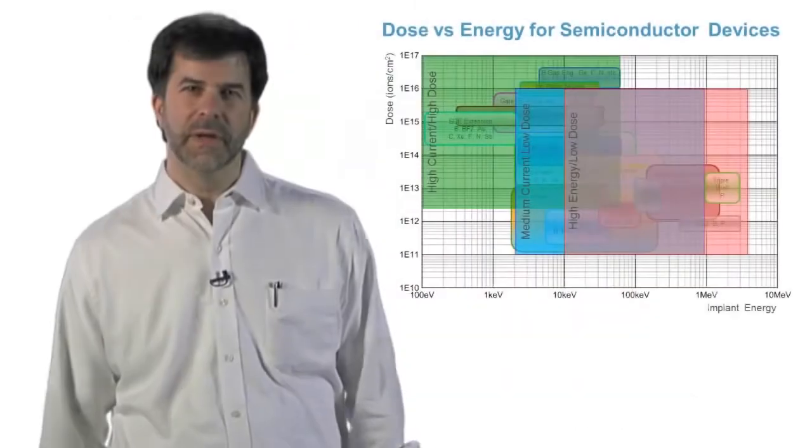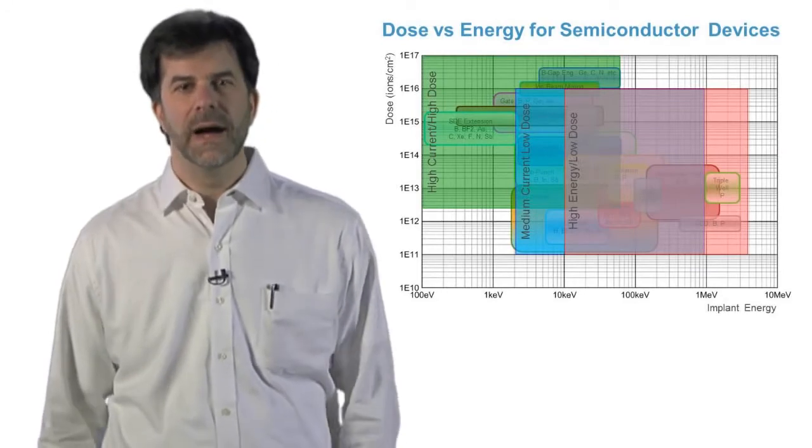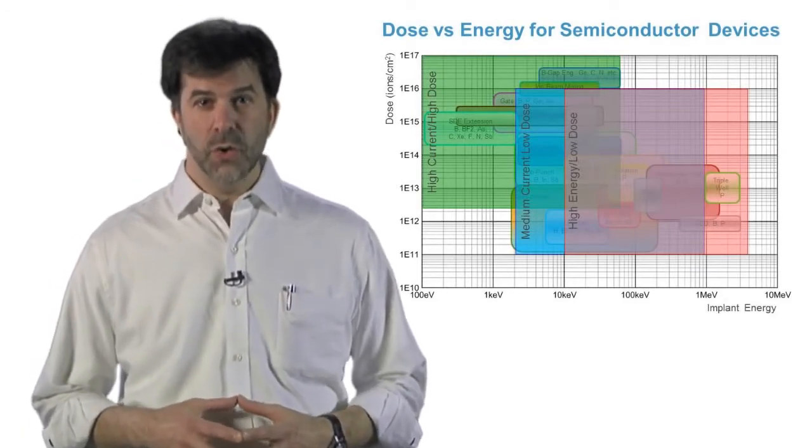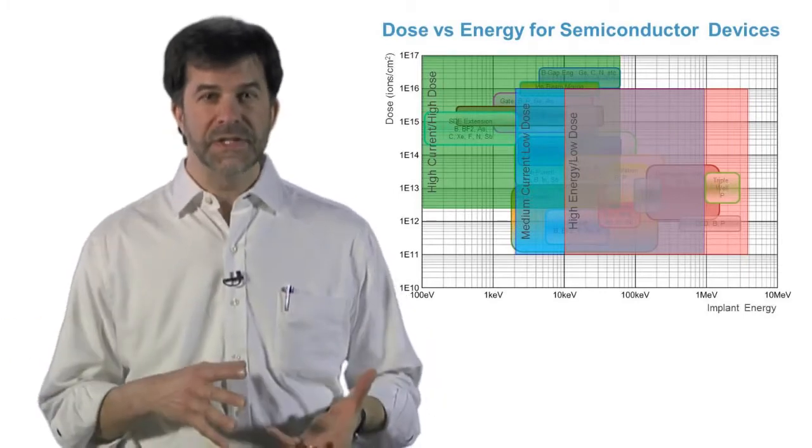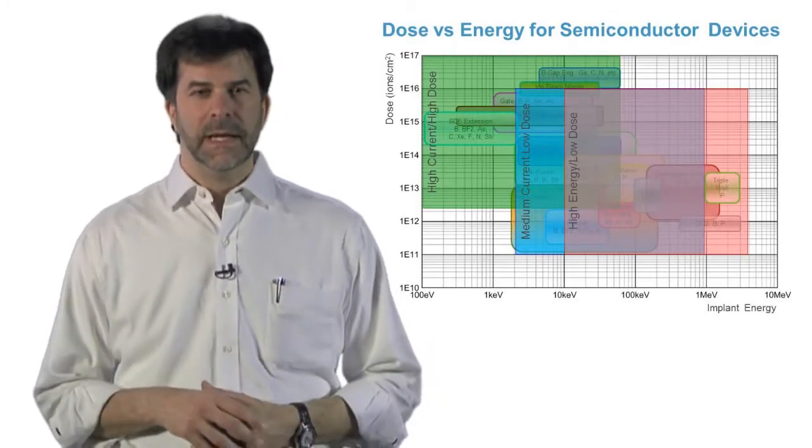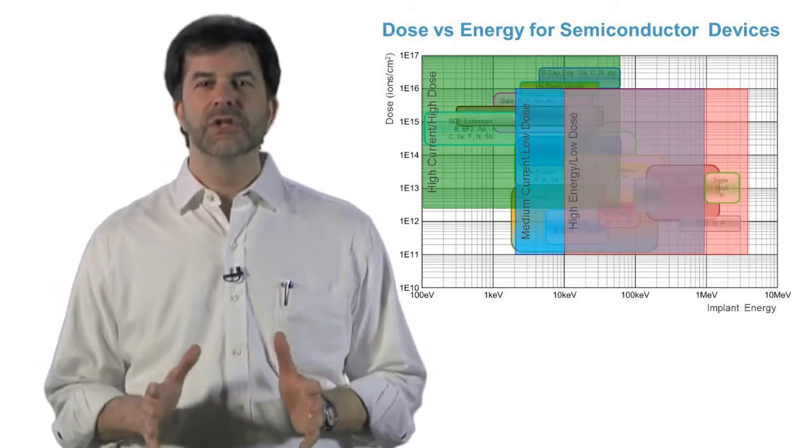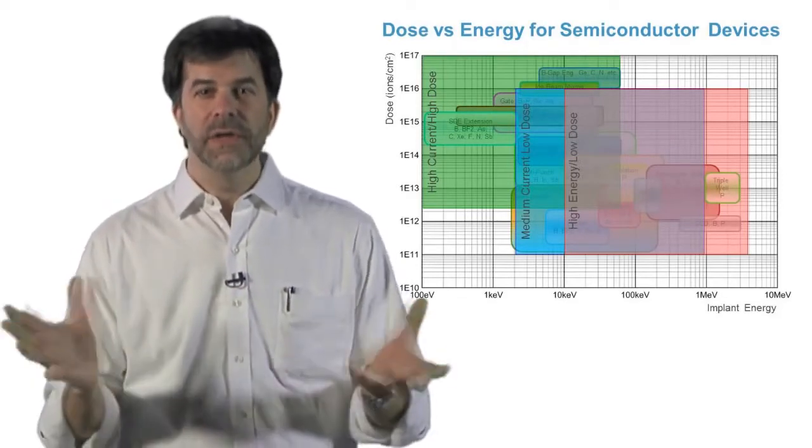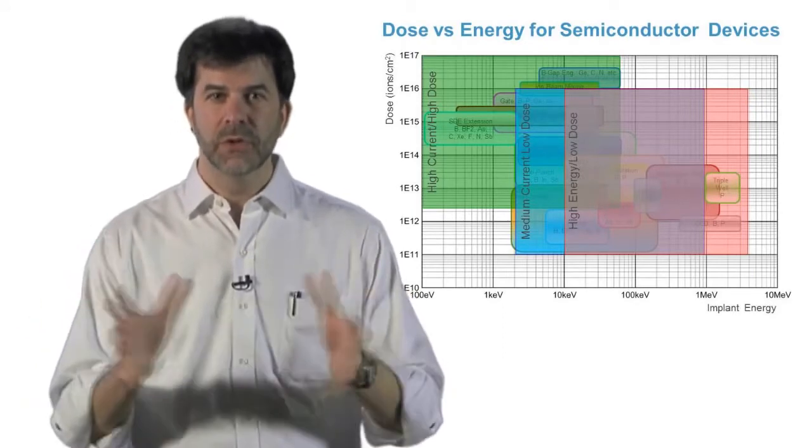A high current implanter is used in applications that require a lot of ions implanted shallowly. A high energy implanter requires orders of magnitude fewer ions implanted very deeply, and there are a whole bunch of applications right in the middle for medium current implanters. If there were an implanter that could do all the applications, it would be a medium current tool.